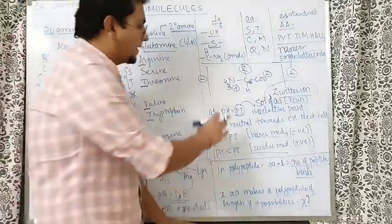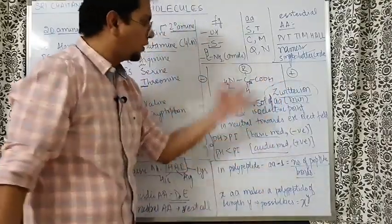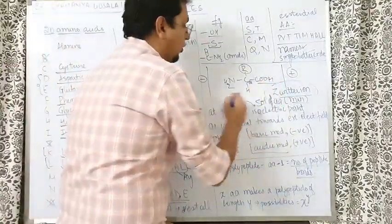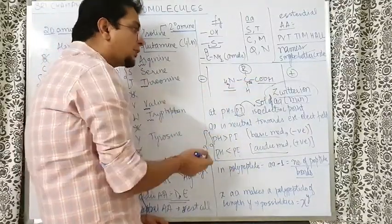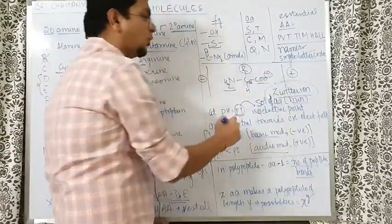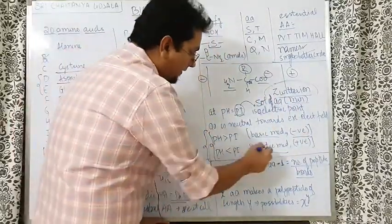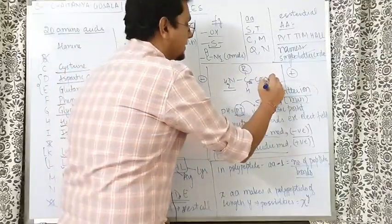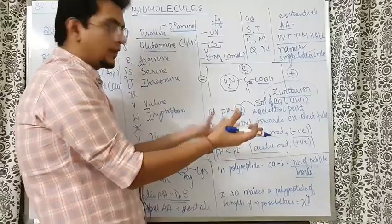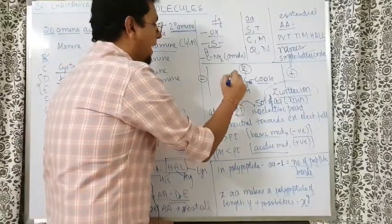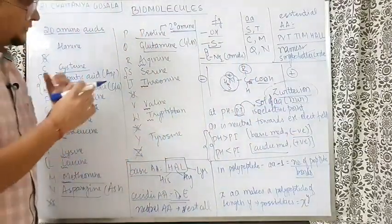If the medium is basic, the acidic part — the COOH group — will react more. Deprotonation will increase, giving more negative charge. Similarly, if the pH is acidic, the basic part will react more. Because H+ ions are more, NH3+ will form and a positive charge will appear on the amino acid.